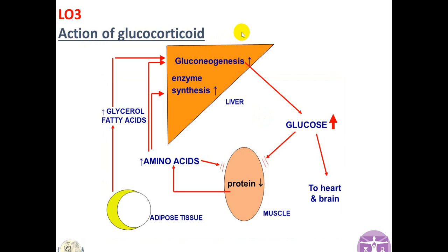What are the actions of glucocorticoids? Glucocorticoids are the stress hormones — we need them during times of stress. Whenever there is excess cortisol, it acts on the liver to increase gluconeogenesis and enzyme synthesis, leading to increased blood glucose concentration. We need glucose as energy for the heart, brain, and essential organs during stressful situations. Cortisol also acts on adipose tissue, causing breakdown of lipids to form fatty acids and glycerol as an energy source for the body.